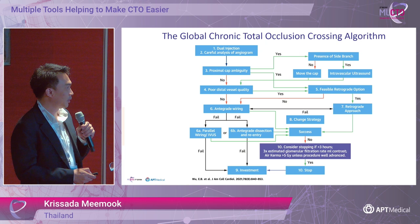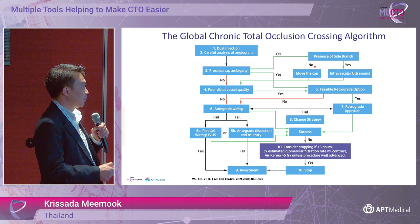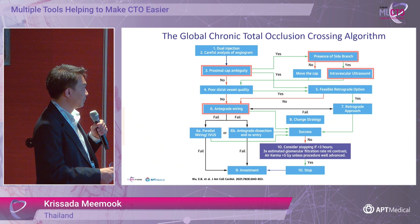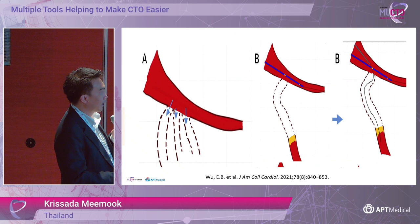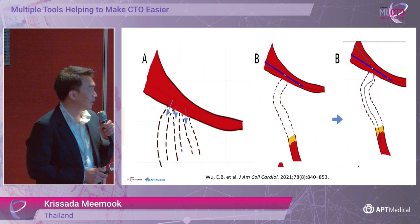This is the global chronic total occlusion crossing algorithm published in JACC two years ago. If there is proximal cap ambiguity and a side branch is present, we can use IVUS to guide antegrade puncture of the ostium. This cartoon shows how to use IVUS to guide antegrade puncture — we put the guidewire into the side branch and use IVUS to identify the ostial or proximal cap of the CTO, then use a microcatheter to puncture the proximal cap.